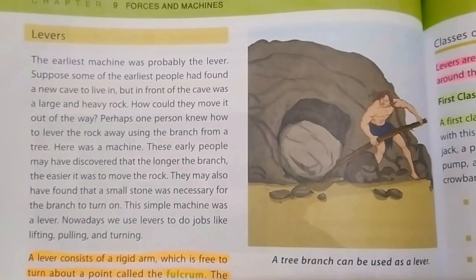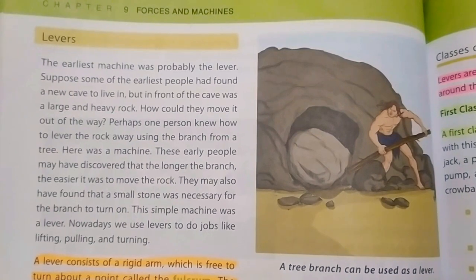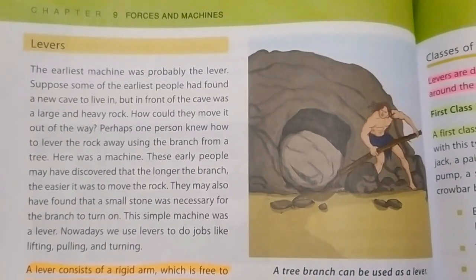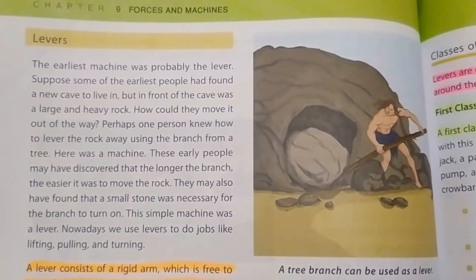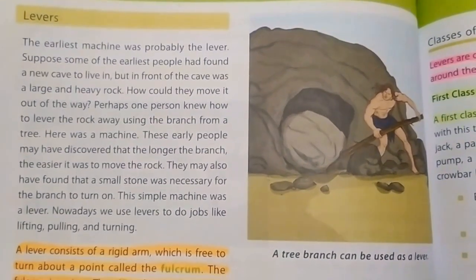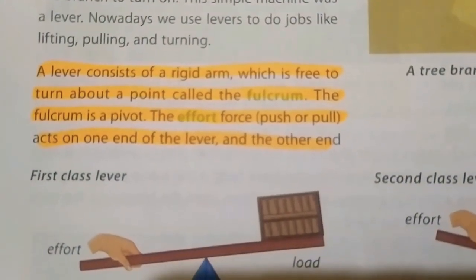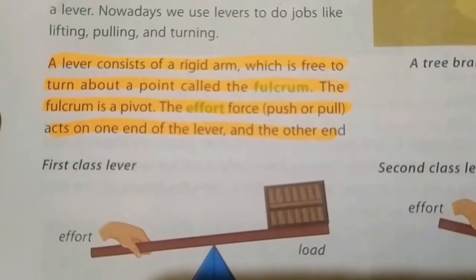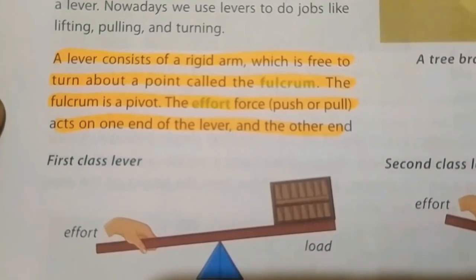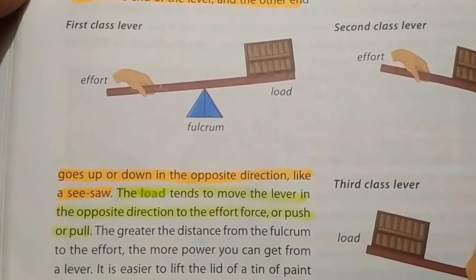At page number 98, we can see that a tree branch can be used as a lever, and this clever trick was used thousands of years ago by ancient man. That's why levers are considered the earliest machines discovered by man. A lever consists of a rigid arm which is free to turn about a point called the fulcrum. The fulcrum is a pivot. The effort force acts on one end of the lever and the other end goes up or down in the opposite direction.